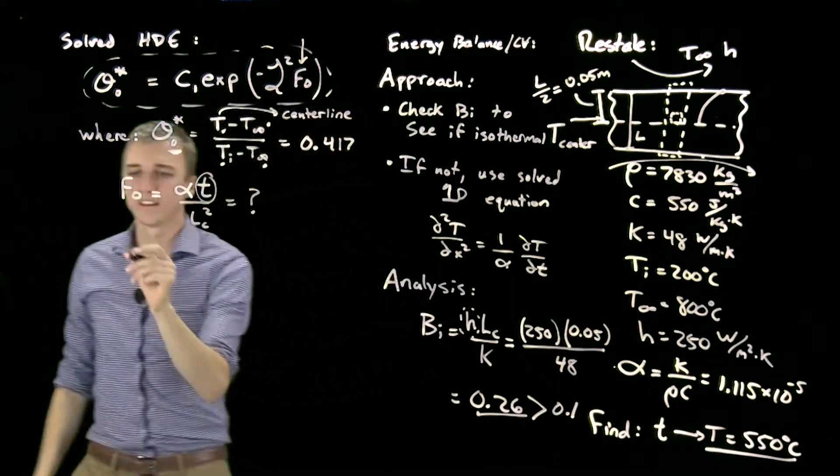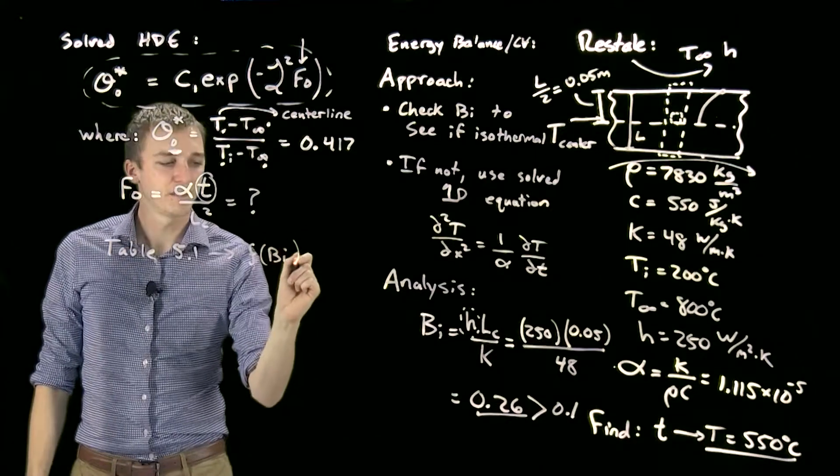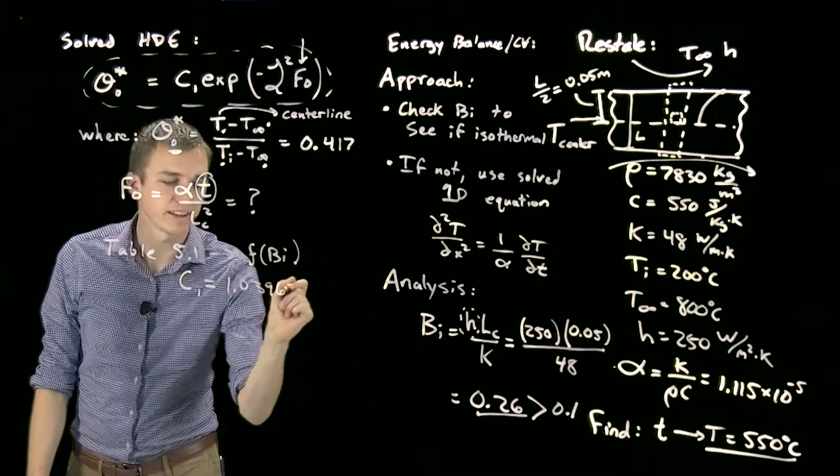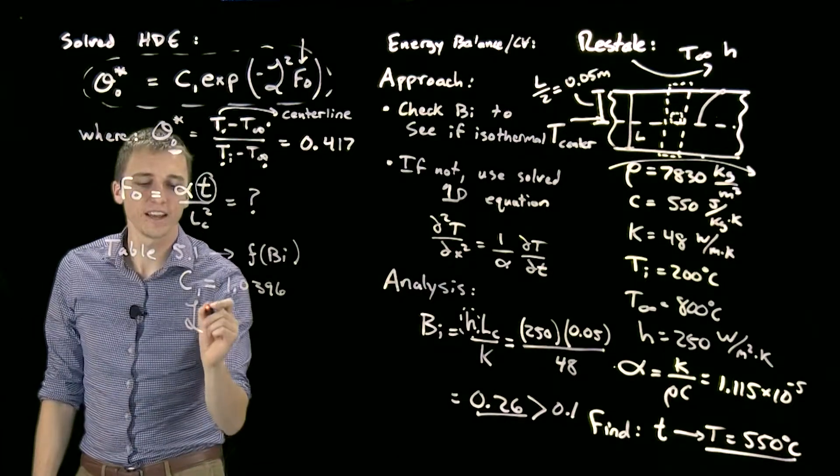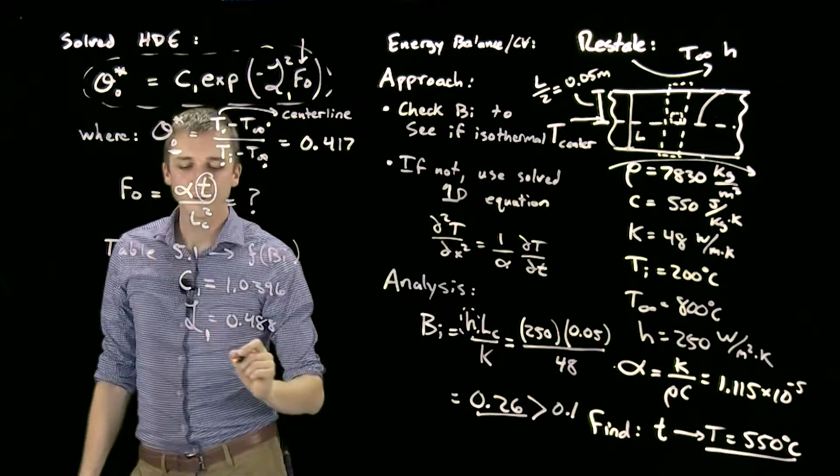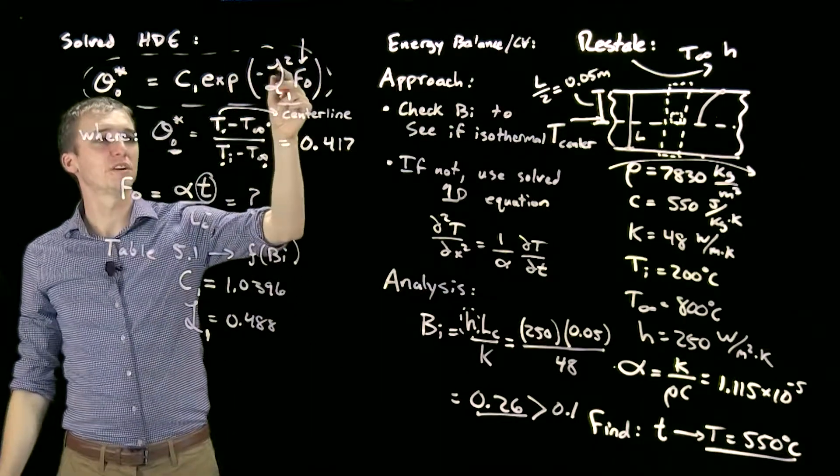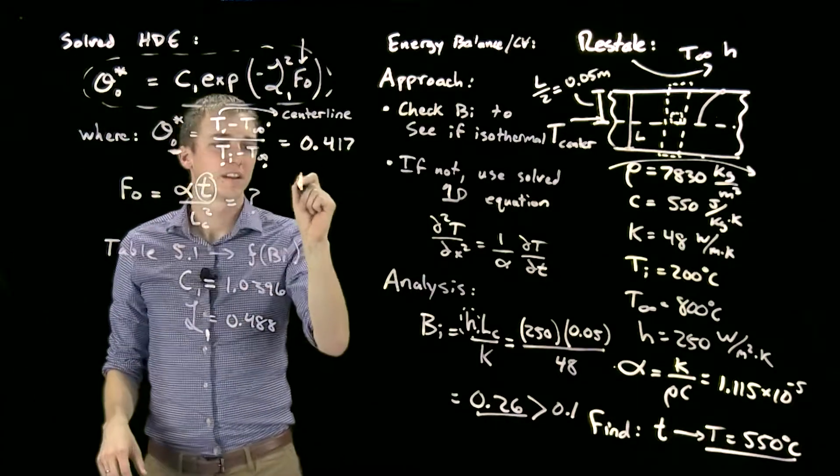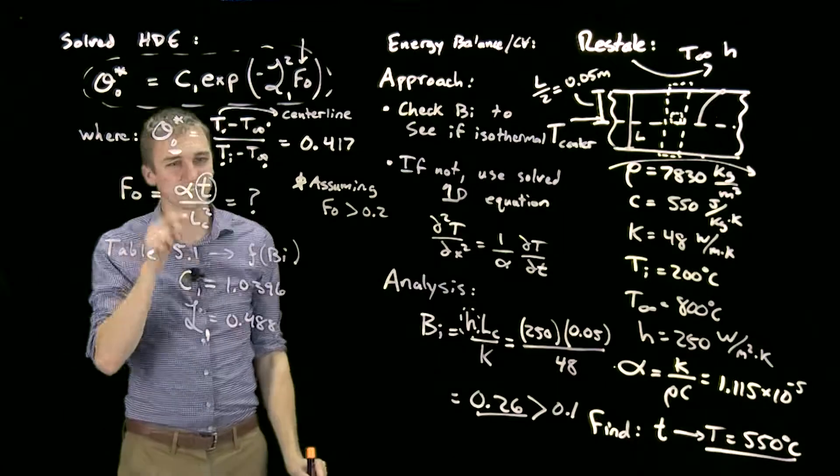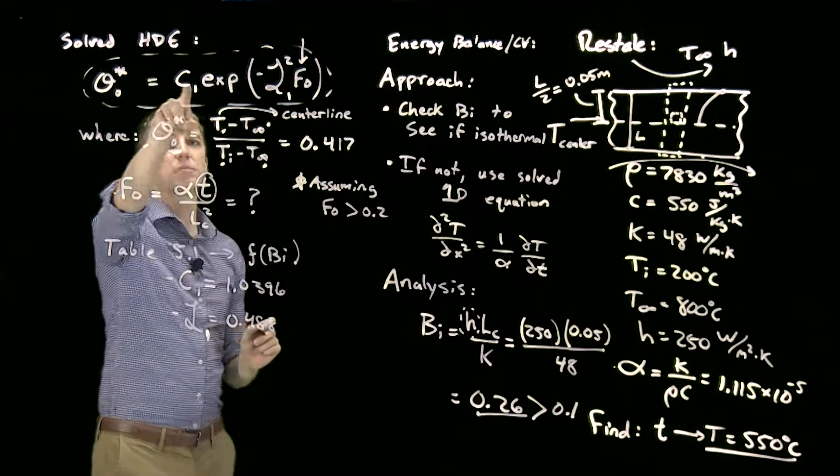We're going to look those up in Table 5.1, and they are a function simply of the Biot number. I've looked those up already. C₁ = 1.0396—we had to do a little interpolating of our table—and then our zeta term equals 0.488. This is actually ζ₁. In reality, this solution would have an infinite series, but we are approximating using only the first term because our Fourier number we're assuming—so we've now made an assumption—assuming that our Fourier number is greater than 0.2. We're going to have to check that. So we have our zeta, we have C, we have θ₀, we don't know Fourier, but we're going to plug it all into here and solve for it.